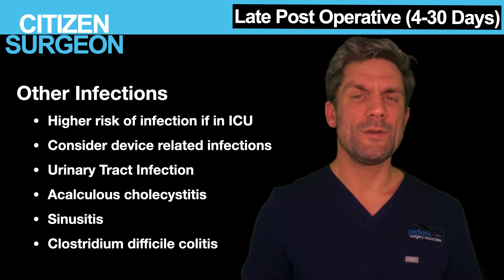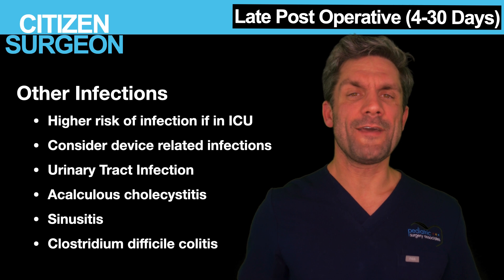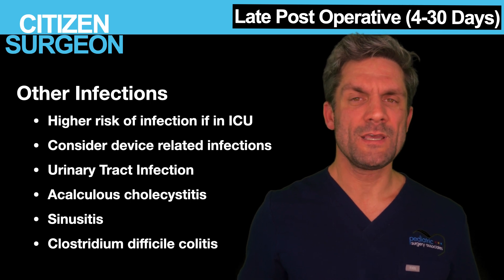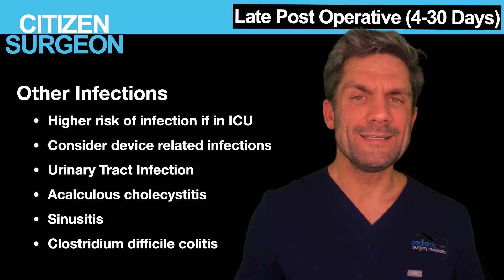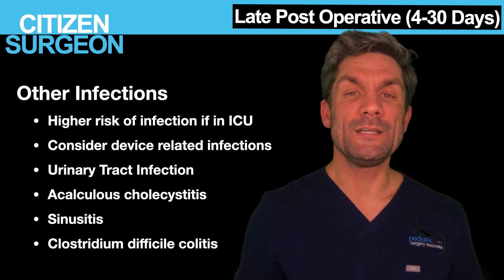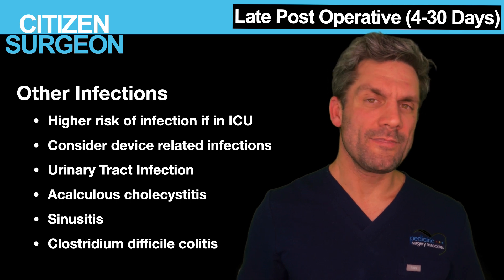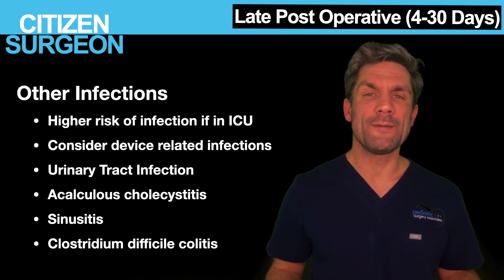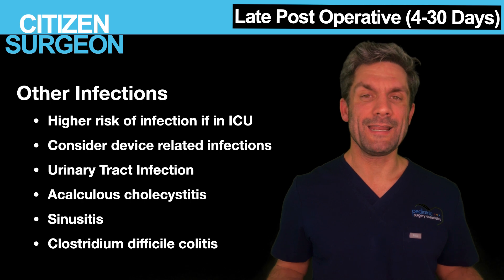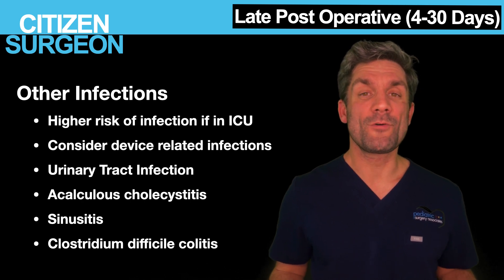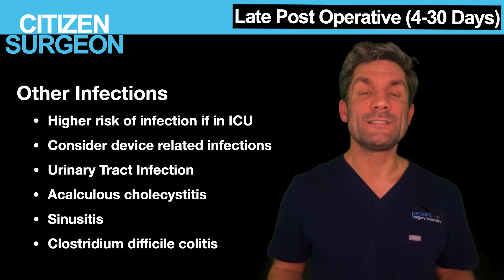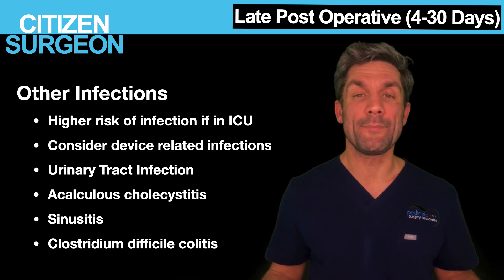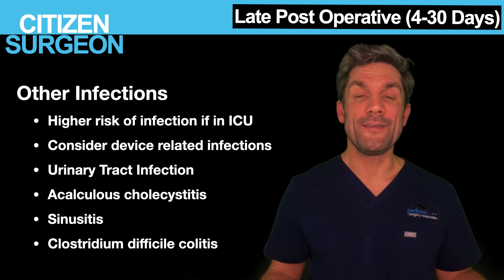The risk of infection is higher in ICU patients, and it's important to consider device-related infections — is there a central venous catheter, an indwelling urinary catheter, a shunt, drain, or chest tube? These are all routes of possible bacterial invasion. Other infections to consider include acalculous cholecystitis, sinusitis, and urinary tract infection. Clostridium difficile colitis can occur in patients on ongoing antibiotics — the microbiome is wiped out, C. diff overpopulates the colon, leading to fever and colitis.